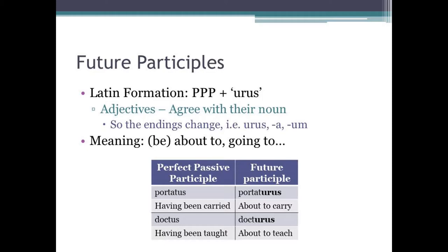Future participles are translated with 'about to' or 'going to.' And finally, look at this table comparing PPPs with future participles — I've highlighted the endings of future participles in bold. If you'd like to watch my video on perfect passive participles, tap in the top right for my video covering stage 21. Anyway, that's enough plugging for now. On with the vocab.